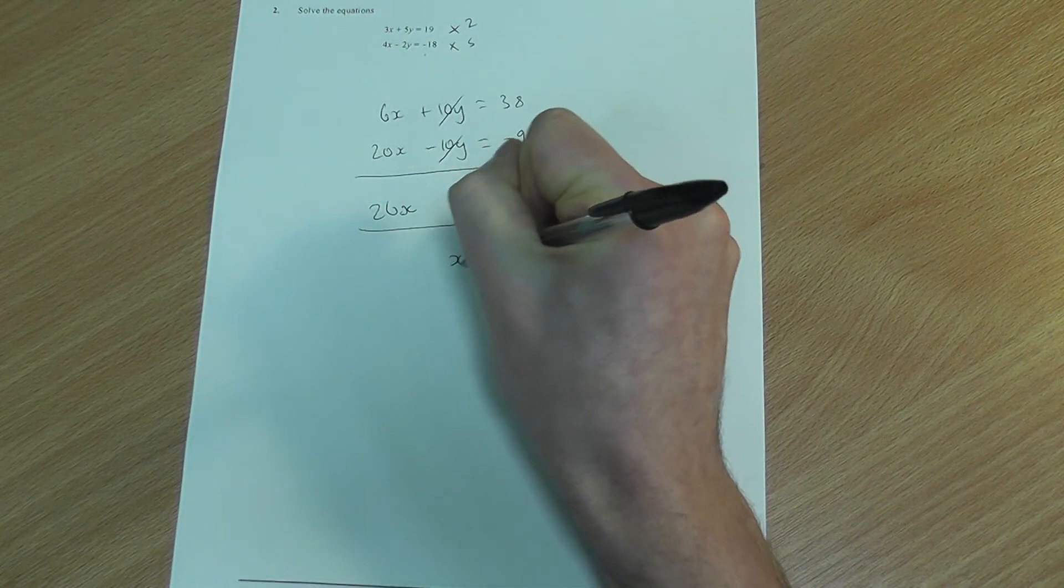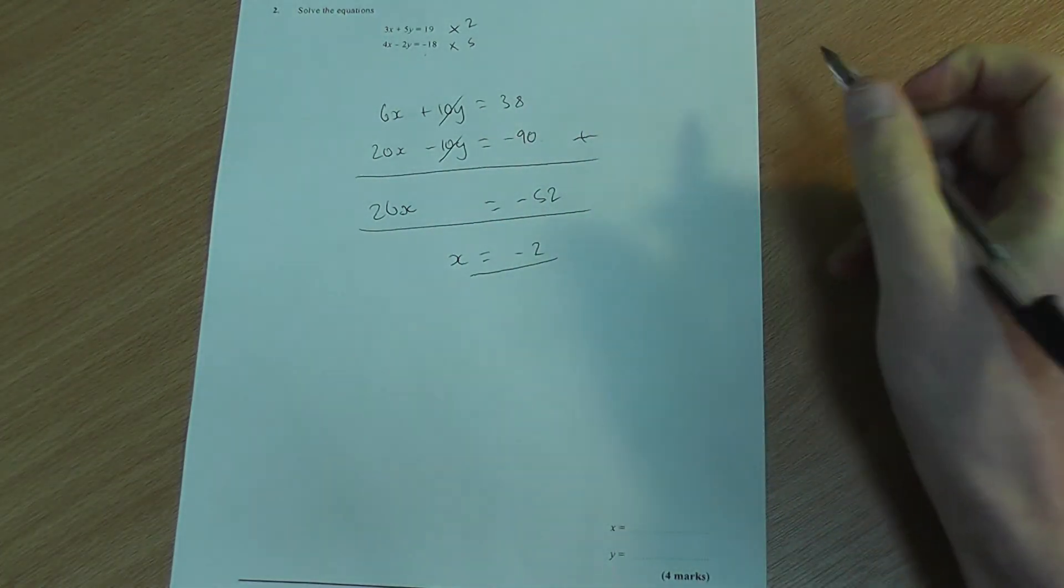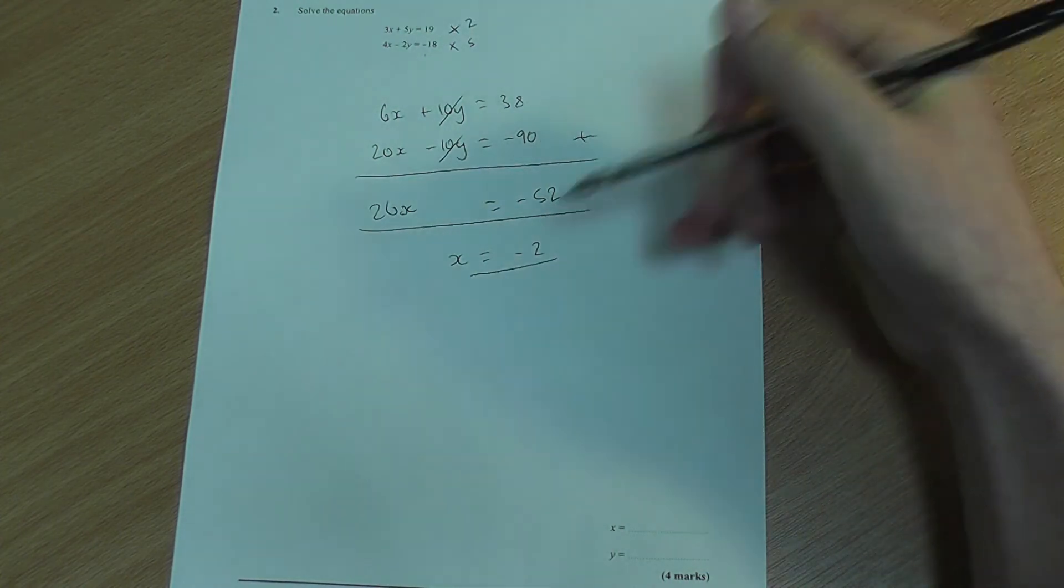So, therefore, x is worth minus 2. Don't stop there, though, because I've got my x's, don't have my y's.